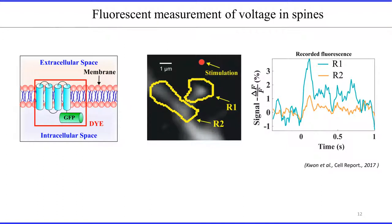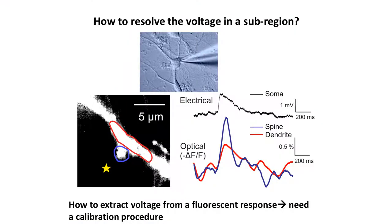Now, how do we apply this to dendritic spines? Using the ArcLight indicator, we define two regions of interest, R1 and R2. Following glutamate uncaging stimulations, we recorded the fluorescence in these two regions as a function of time. You can see the fluctuations and changes in signal in region 2 and region 1. We now have responses in the spine, in the dendrite, and in the soma, and we want to extract the voltage from the fluorescent response using our calibration procedure.